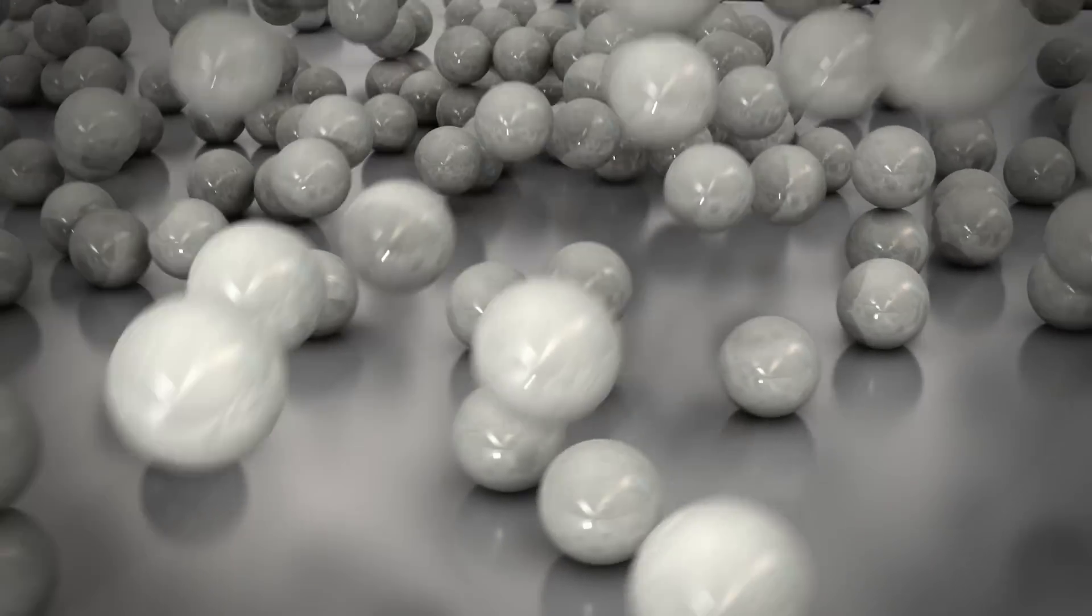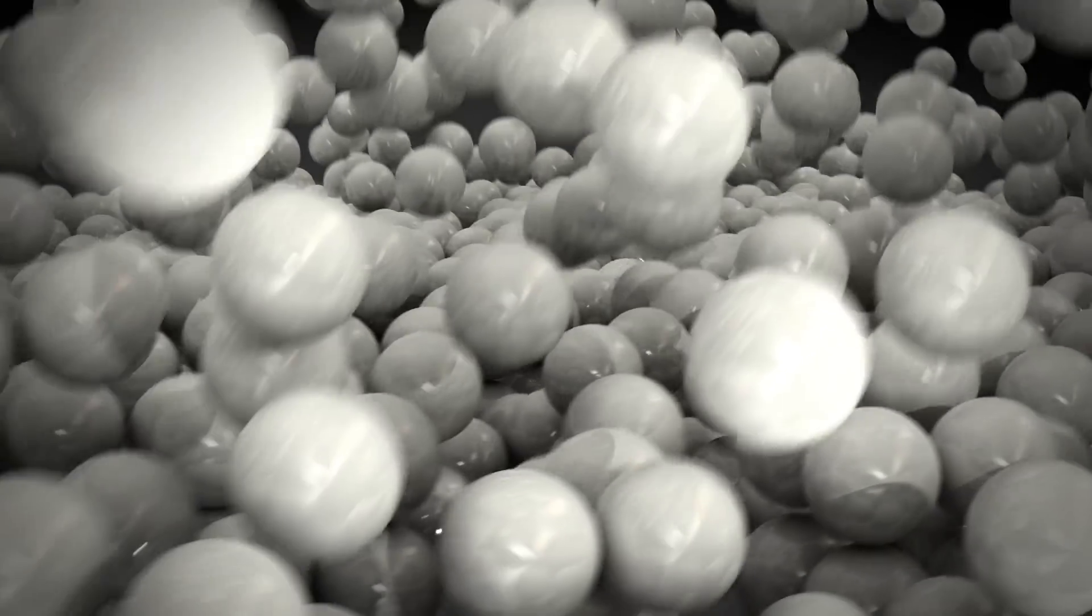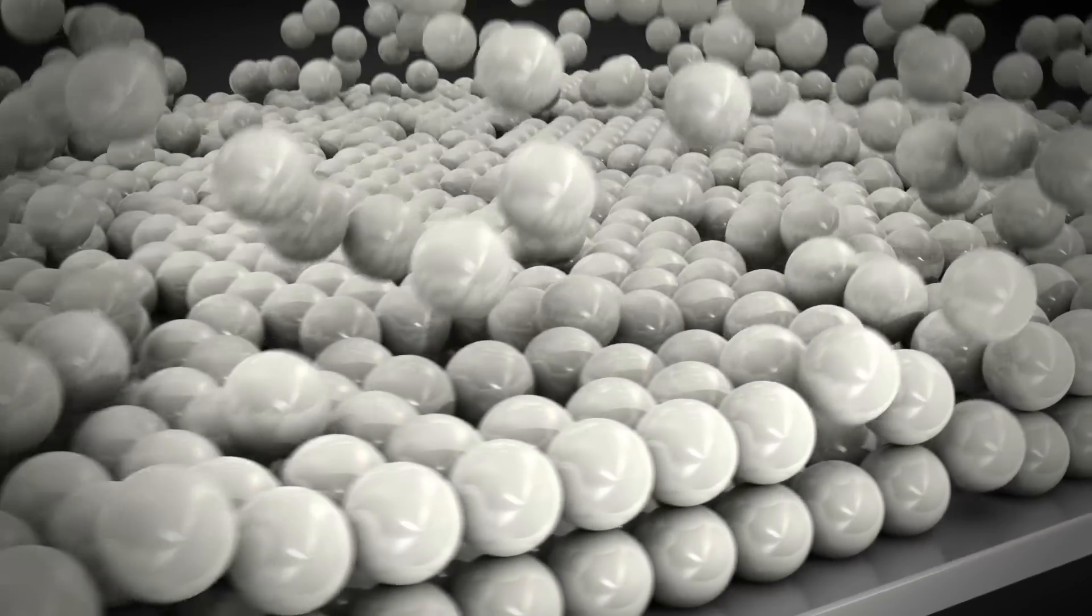Layer by layer, the ejected molybdenum atoms are deposited onto the glass substrate opposite the sputtering target.